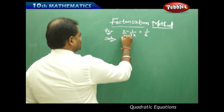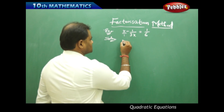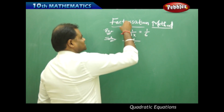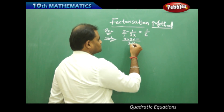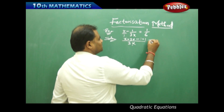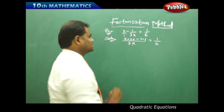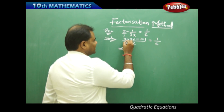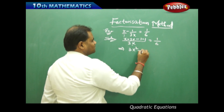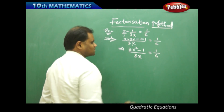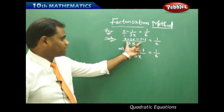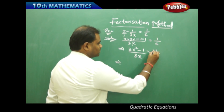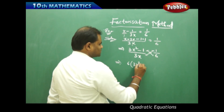To start, I take the LCM of x and 1 over 3x, which comes out as 3x. So this gets multiplied: 3x times x, and 1 times 1, giving us the LCM part. This equals 1 over 6. Then x times 3x gives 3x squared, minus 1 over 3x equals 1 over 6 after taking the LCM.